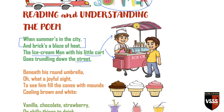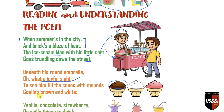'Beneath his round umbrella' — this cart has a round umbrella. Beneath means below his round umbrella. 'Oh, what a joyful sight' — the poetess wants to say what a wonderful sight it is. 'To see him fill the cones with mounds cooling brown and white.' Mound is the filling part on the cone. Brown here signifies the lower cone part and white is the cream part. What a joyful sight to see him fill the cones with mounds of cooling brown and white ice cream.